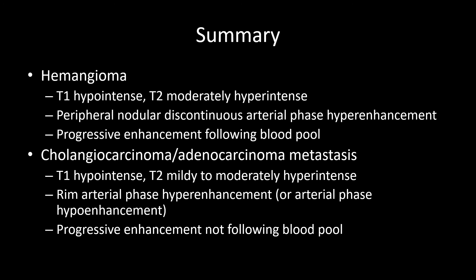In summary: hemangiomas are T1 hypointense, moderately to markedly T2 hyperintense similar to subcutaneous fat, with peripheral nodular discontinuous arterial phase hyper-enhancement and progressive enhancement following blood pool. If the enhancement is contiguous, not peripheral, or not nodular, it should be called an indeterminate mass. A sclerosed hemangioma will more closely mimic cholangiocarcinoma or adenocarcinoma metastasis: T1 hypointense, mildly to moderately T2 hyperintense, with arterial phase hyper- or hypo-enhancement and progressive enhancement not following blood pool. Part three will address pitfalls and atypical presentations.